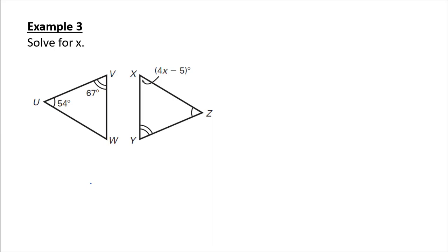Solve for x. I have angle Z marked with 1 arc, so that equals angle U which equals 54. I have angle V which equals angle Y which equals 67. So I have to find the third angle in that triangle. I do 180 minus 54 minus 67,